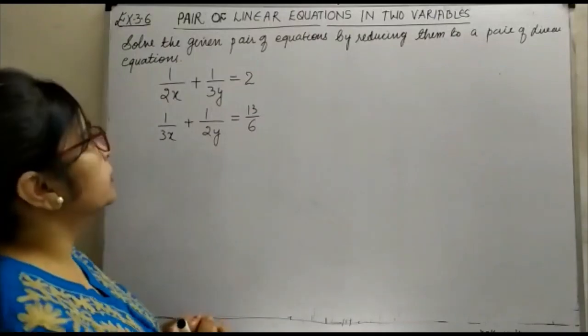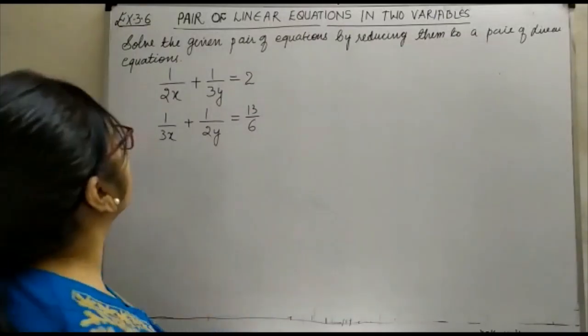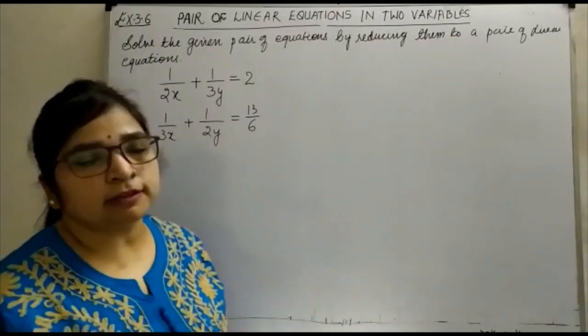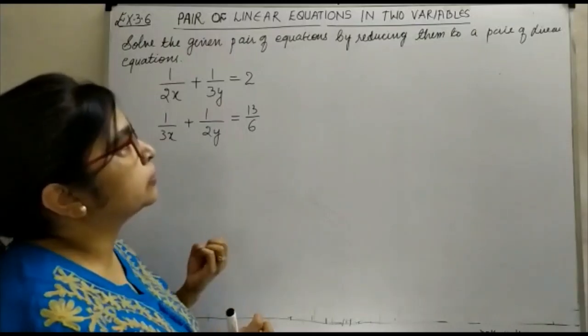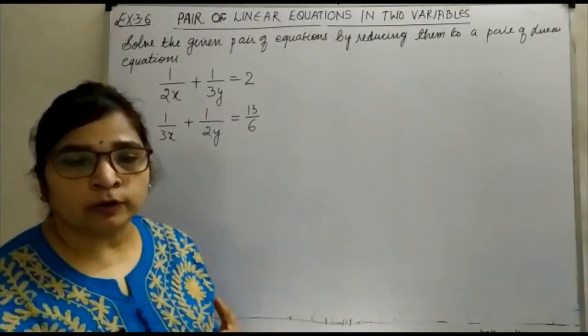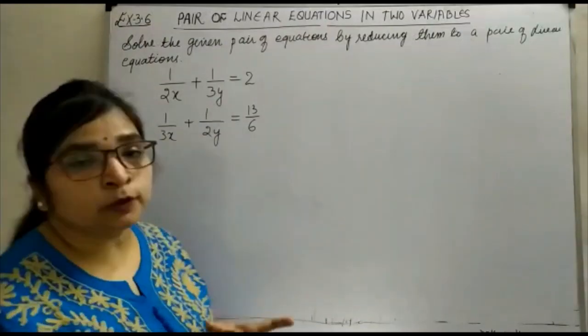Hello everyone, today in chapter 3, pair of linear equations in 2 variables, we are going to see exercise 3.6. Your exercise 3.6 is based upon the equations which are not linear pair but which can be made linear pair by reducing them.